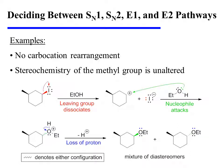Notice two important subtleties in this reaction. The first is that no carbocation rearrangement took place, despite the fact that there is a tertiary center within the molecule. The reason is that carbocations can only be shifted to the adjacent position — the carbocation is secondary, and both positions adjacent to it are also secondary, so there would be no energetic benefit to rearrangement. Also notice that the stereochemistry of the methyl group is unaltered in both products, because no reaction took place at that center.